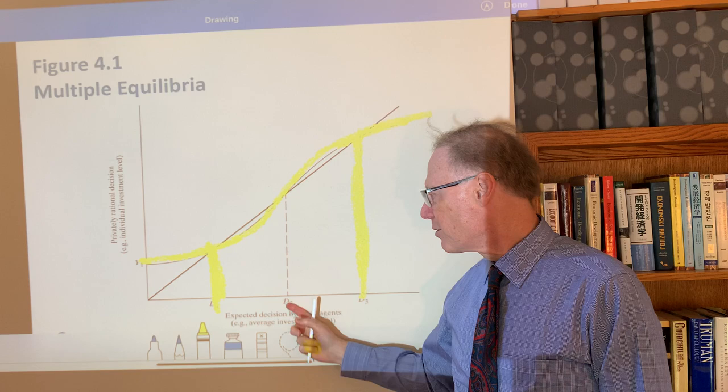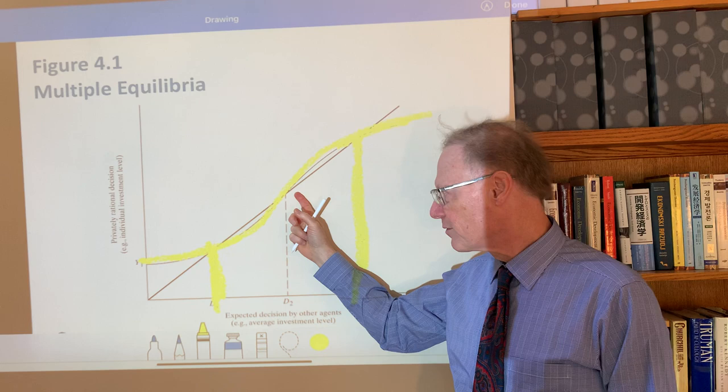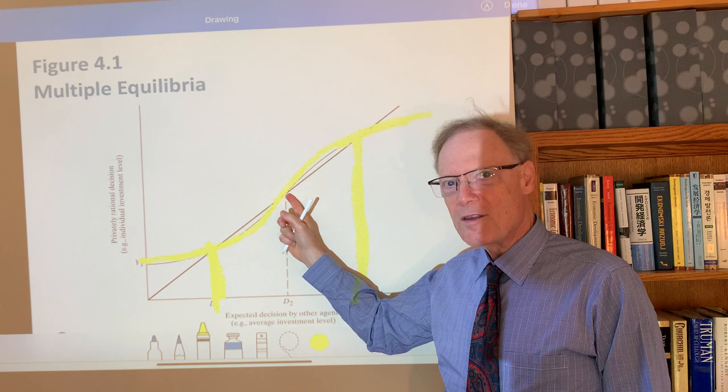Now we have this other point in which the reaction function cuts the 45-degree line. It's labeled D2 in the diagram in the textbook.